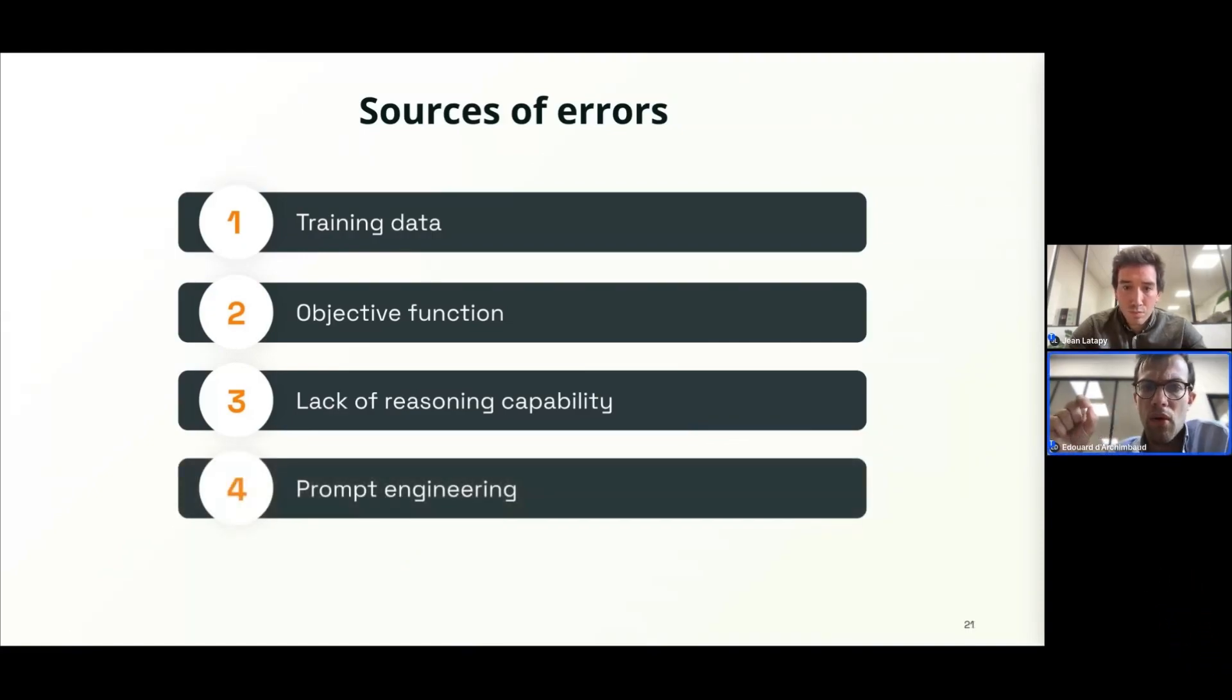And the last main source of error is the prompting. So those models are sensitive to the quality of the prompts. You can use different prompts and those prompts will lead to a different output.